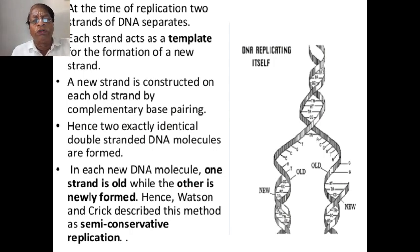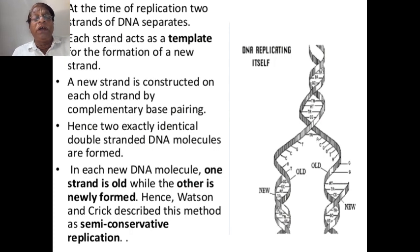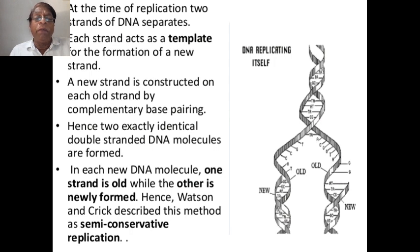There are other methods also proposed by different scientists, but they are not included in your syllabus. For example, DNA replication by the conservative method is one type, and the dispersive method is another type. But the accepted method is the semi-conservative method — DNA replication does not take place by conservative or dispersive methods. This is also experimentally proved.